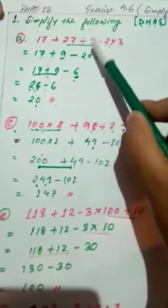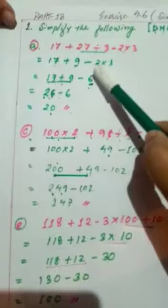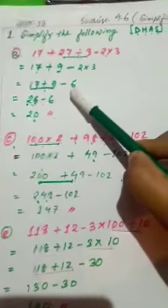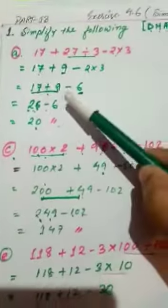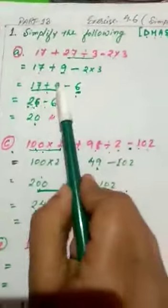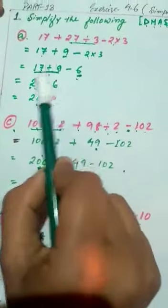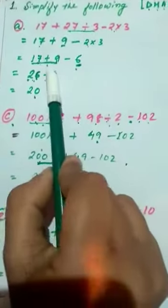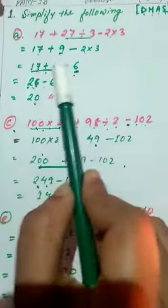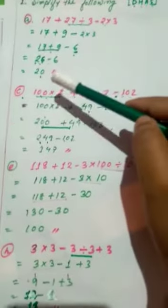27 divided by 3 means 9. Now we have to move to the multiplication work, so 2 into 3 means we get 6. After getting 6, we have to do the addition work first, so 17 plus 9 is 26. Then 26 minus 6 is 20. Students, you have understood it?